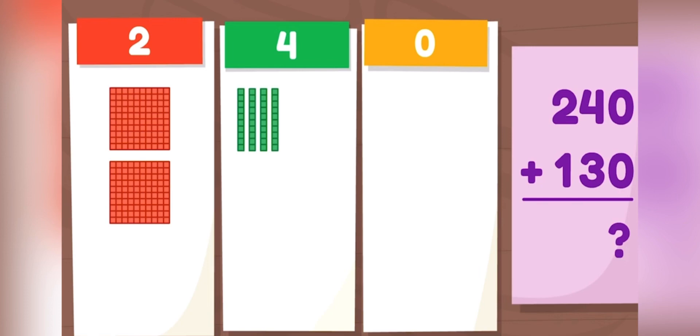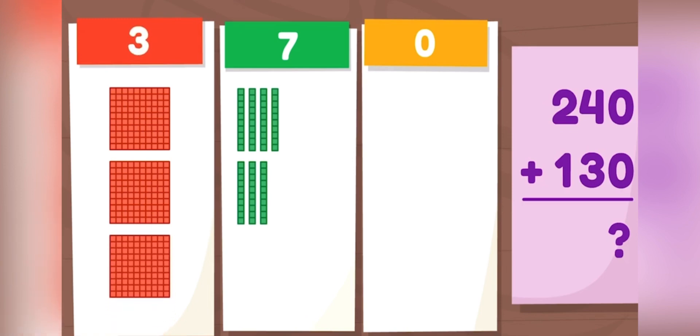Now we want to add 130. There are zero ones in both of these numbers, so let's focus on the tens and hundreds. First, let's add the tens. There are three tens in 130. Now let's add the hundreds. There is 100 in 130.